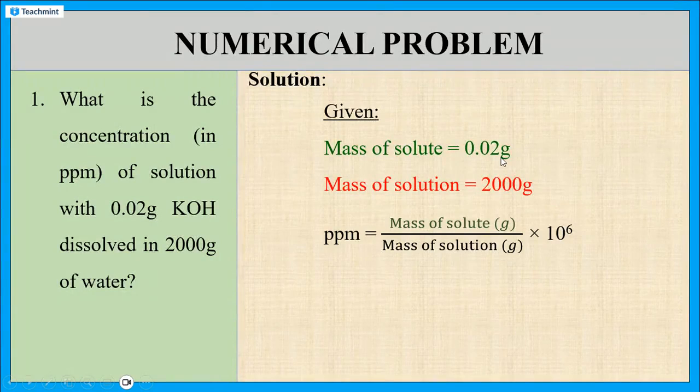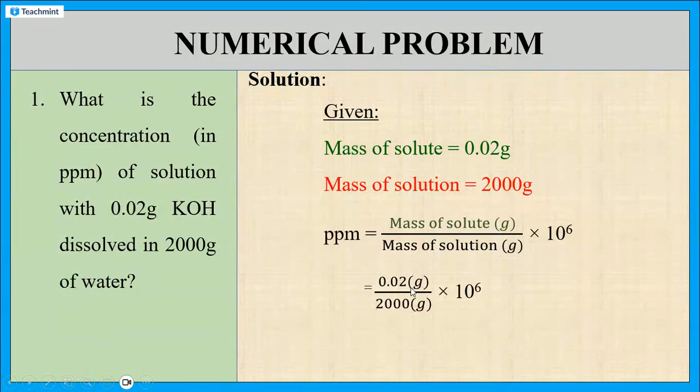Substitute these two values to this equation. Then, PPM becomes 0.02 divided by 2000 in grams times 10 to the power 6. And the final answer is 10 PPM. PPM is the unit of concentration.